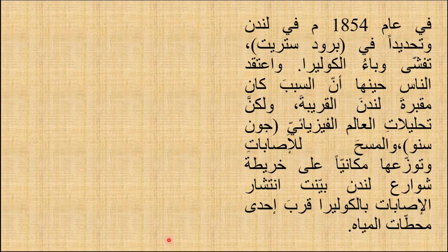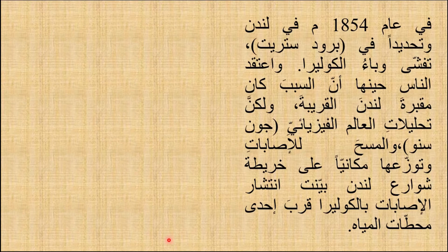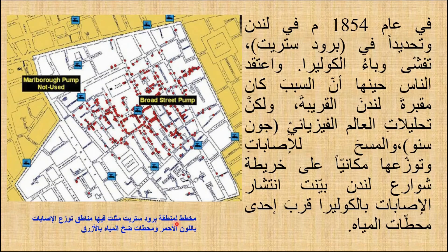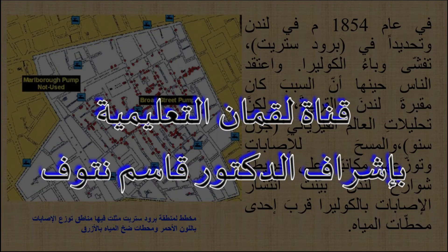لندرس هذه الحالة: في عام 1854 ميلادي في لندن، وتحديداً في منطقة برود ستريت، تفشّى وباء الكوليرا. اعتقد الناس حينها أن السبب كان مقبرة لندن القريبة. ولكن تحليلات العالم الفيزيائي جون سنو ومسح الإصابات وتوزعها مكانياً على خريطة شوارع لندن بيّنت أن انتشار الإصابات بالكوليرا كان قرب إحدى محطات المياه. ونستطيع أن نرى أن الإصابات الأكبر عدداً كانت في محيط محطة برود ستريت لأن المياه كانت ملوّثة.